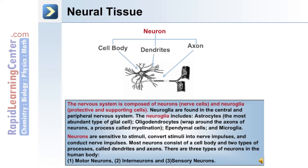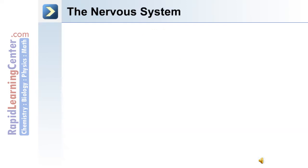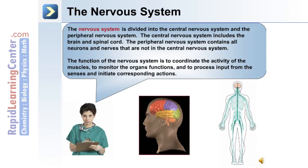There are three types of neurons in the human body: motor neurons, interneurons, and sensory neurons. The two major divisions of the nervous system are the central and peripheral divisions. The central nervous system includes the brain and spinal cord. The peripheral nervous system contains all the neurons and nerves not in the central nervous system. The function of the nervous system is to coordinate muscle activity, monitor organ function, and process sensory inputs to initiate corresponding actions.